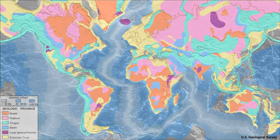The word orogeny comes from ancient Greek: oros, meaning mountain, plus genesis, meaning creation or origin. Although it was used before him, the term was employed by the American geologist G.K. Gilbert in 1890 to describe the process of mountain building as distinguished from epeirogeny.